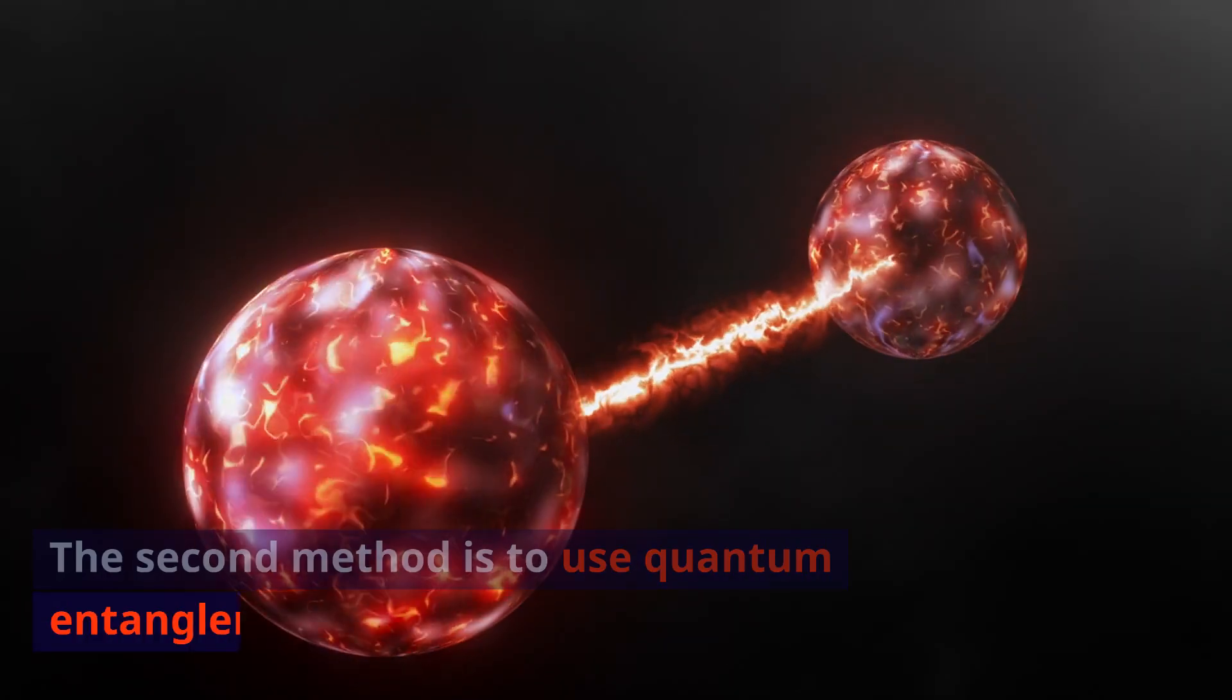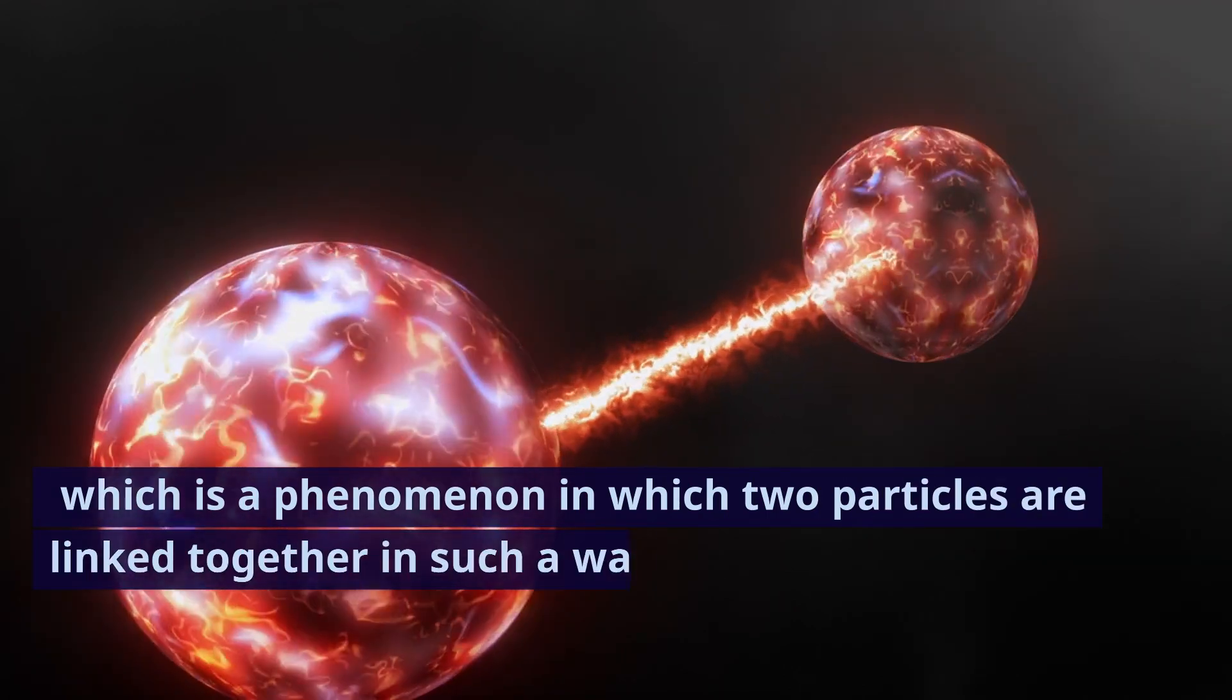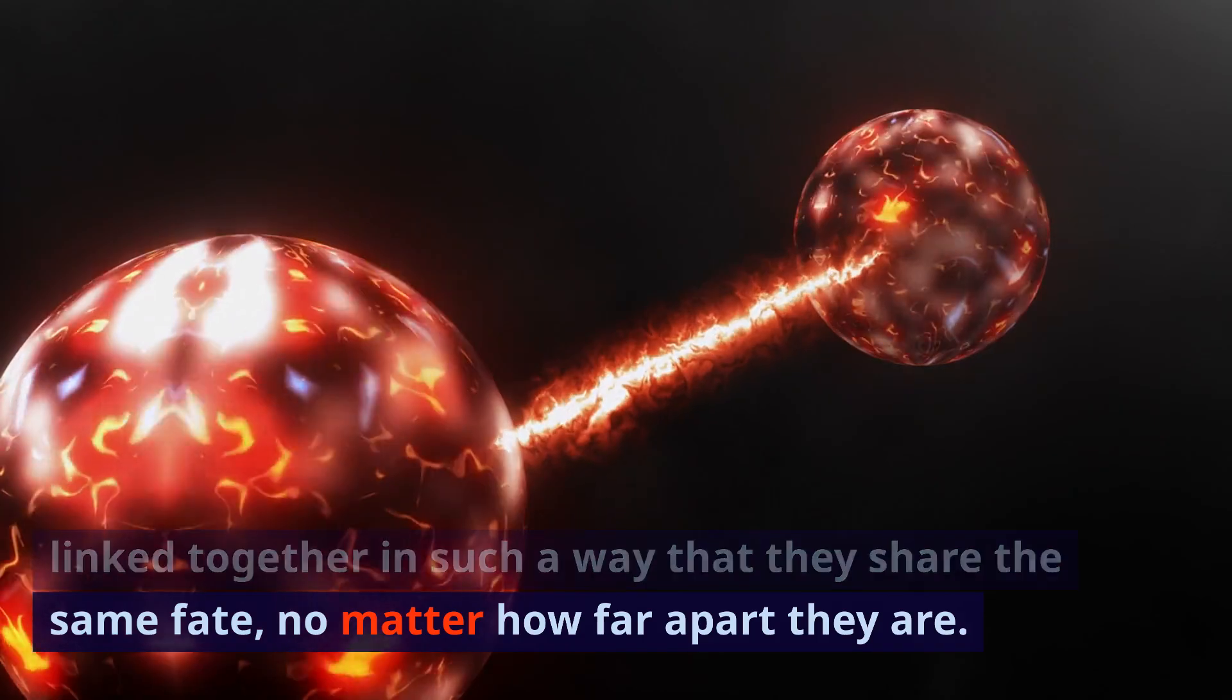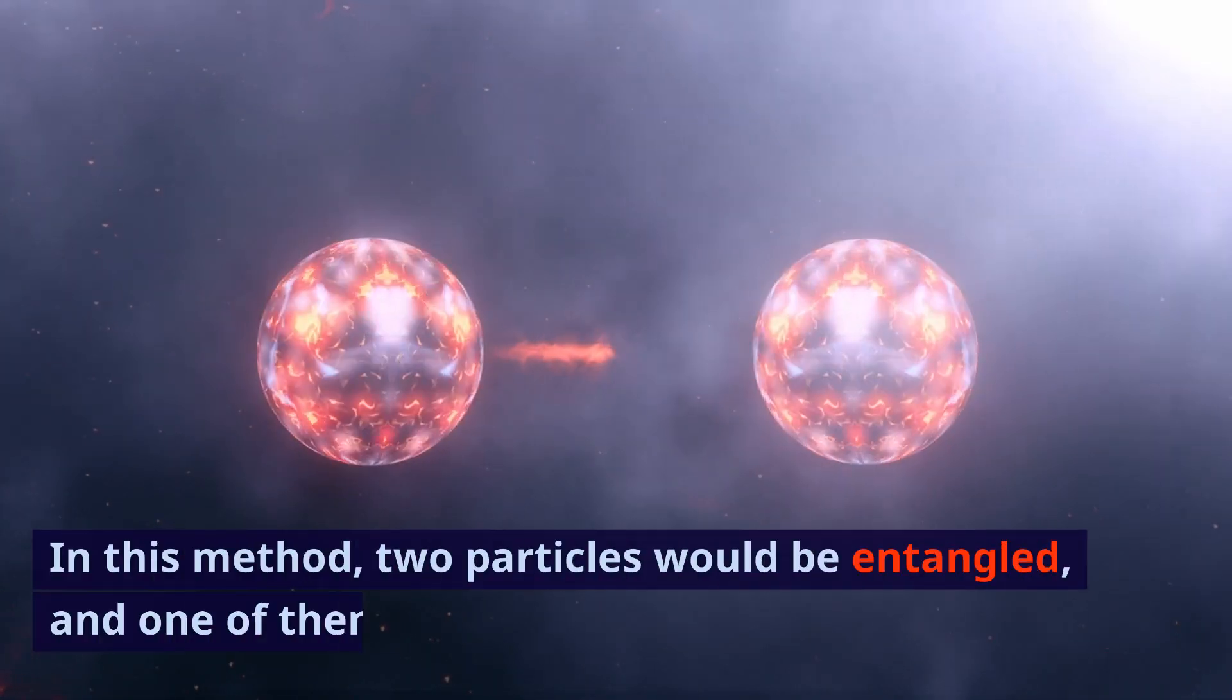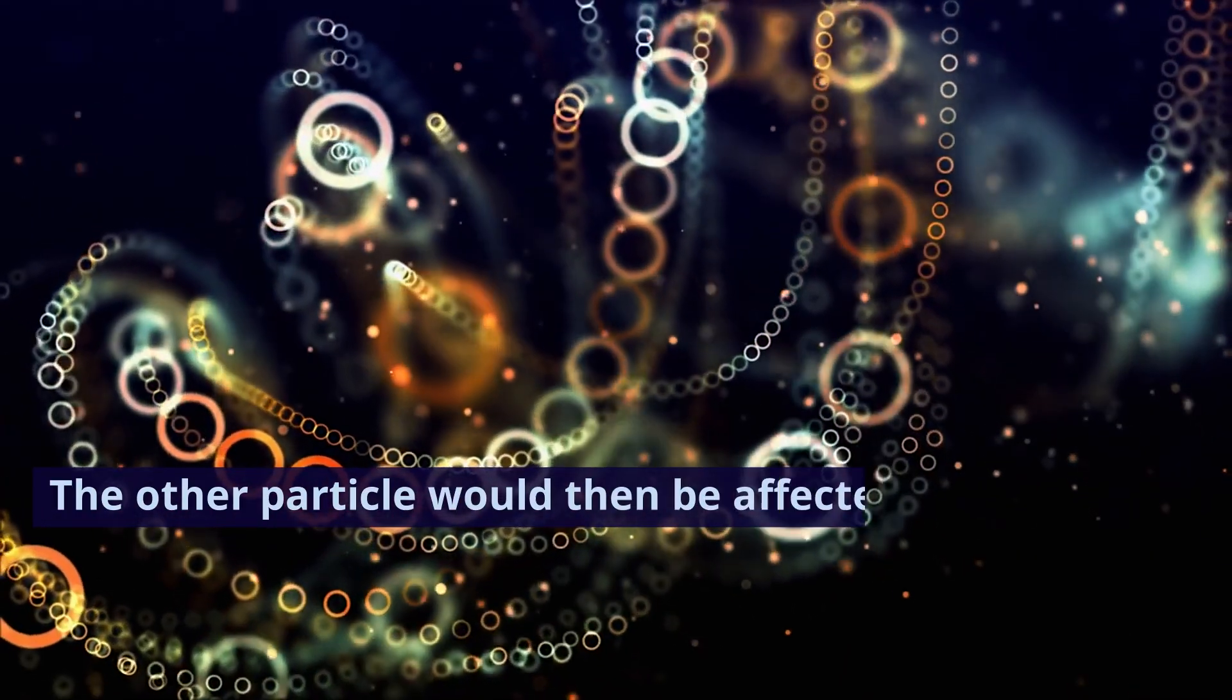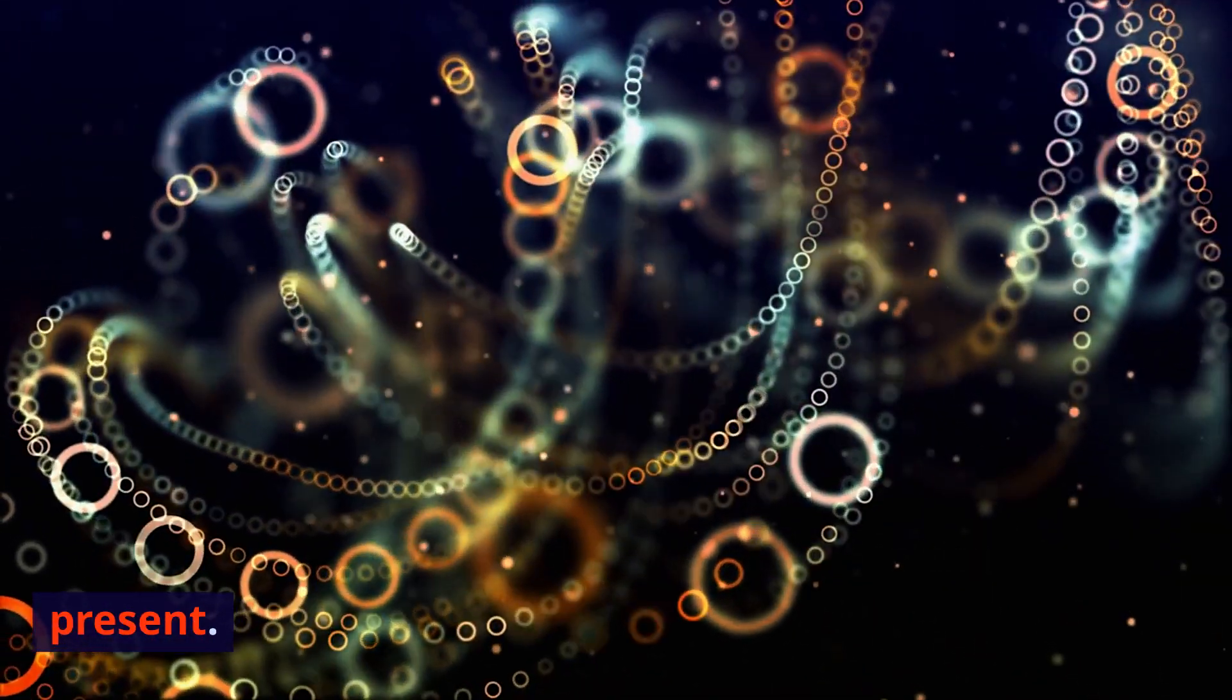The second method is to use quantum entanglement, which is a phenomenon in which two particles are linked together in such a way that they share the same fate, no matter how far apart they are. In this method, two particles would be entangled, and one of them would be sent back in time. The other particle would then be affected by the actions of its past self, even though it is in the present.